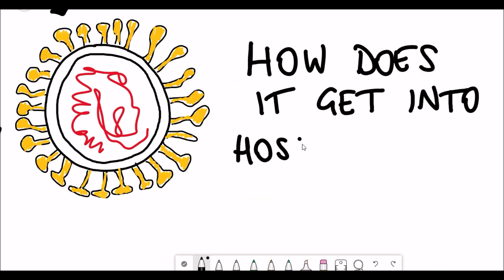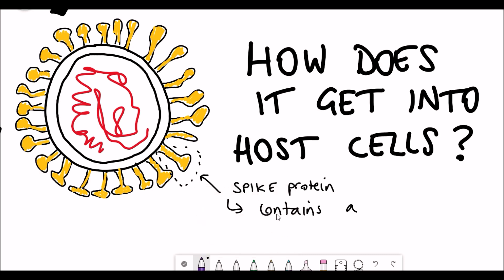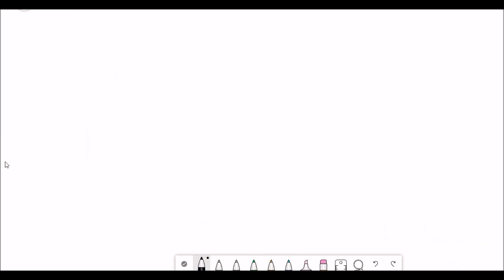So how does the coronavirus get into the host cell? Well, these spike proteins are really important for it. And so these spike proteins have a domain, which is just part of the protein, which is a receptor binding domain. And the receptor it binds to can be found in these host cells.